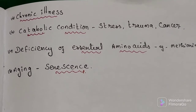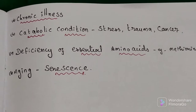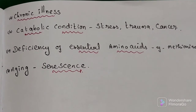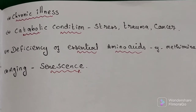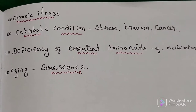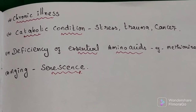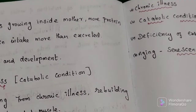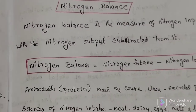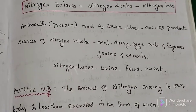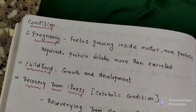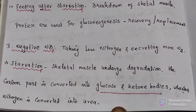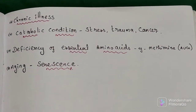The last condition is the aging process, also called senescence. Aging puts a person into negative nitrogen balance because skeletal muscle proteins are breaking down, and the amino acid nitrogen is going into glucose or ketone body formation. These are the examples of negative nitrogen balance. In this video, we discussed nitrogen balance, positive nitrogen balance and its conditions, and negative nitrogen balance along with its examples. Thanks for watching.